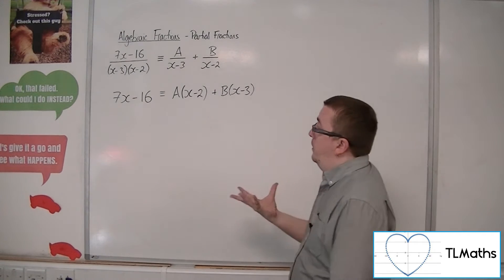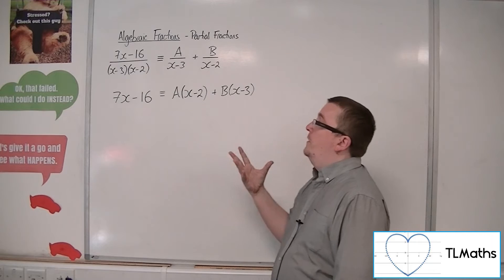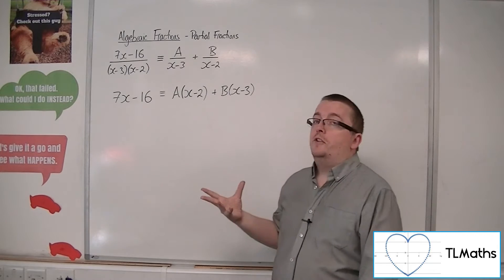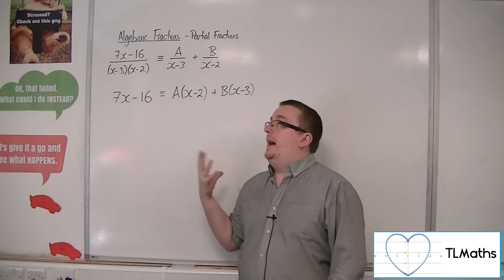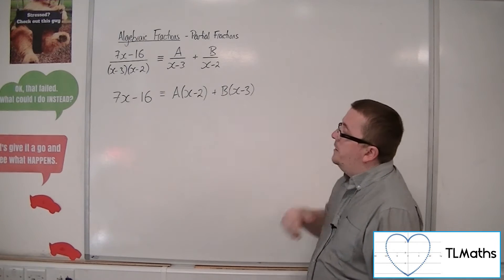We then multiplied both sides by x minus 3 times x minus 2 and reduced it to this line here.